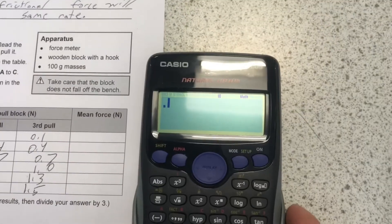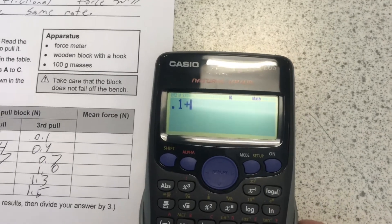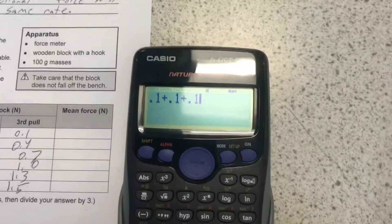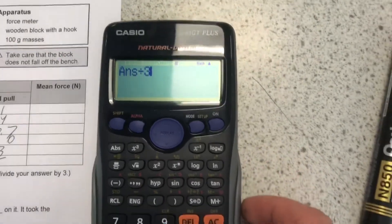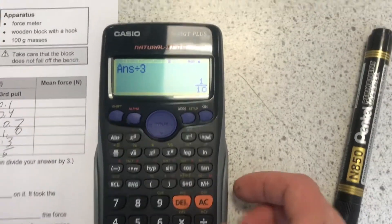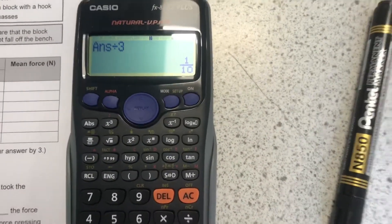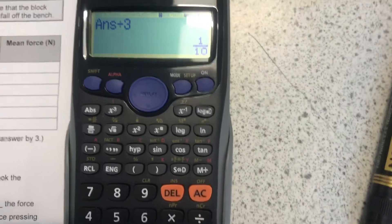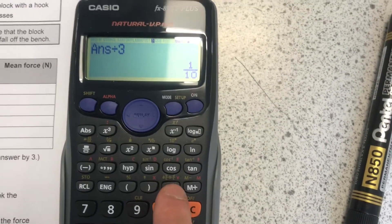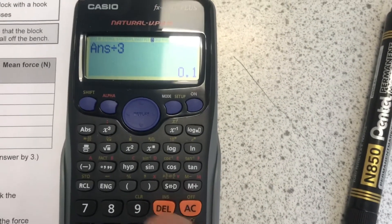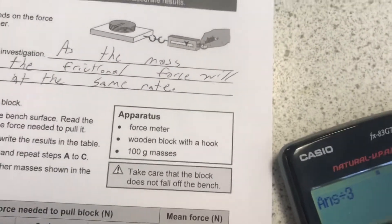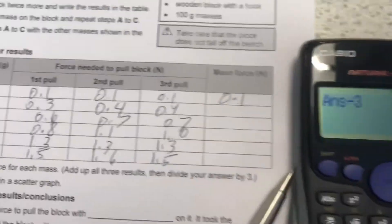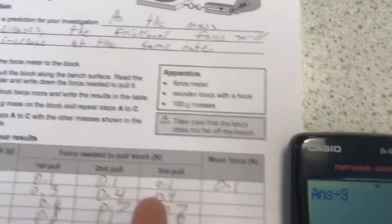We will add all of our results together, 0.1 plus 0.1 plus 0.1, and divide our answer by 3 to get once again 0.1 as our mean. We can see the value is given as a fraction. You must press this button on your calculator to convert the fraction into a decimal. Now record my mean force as 0.1 Newtons. I'll do the same with my next three results.